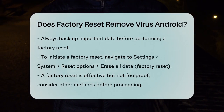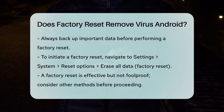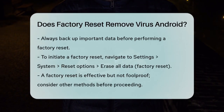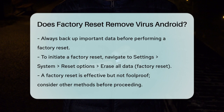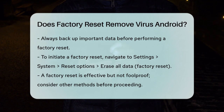If you do decide to perform a factory reset, make sure to back up all your important data first. To do a factory reset on an Android phone, go to Settings, then System, then Reset Options, and select Erase All Data, Factory Reset.